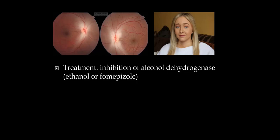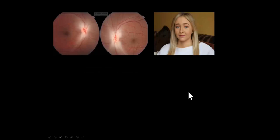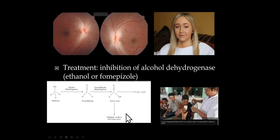Treatment involves inhibiting alcohol dehydrogenase to prevent the breakdown of methanol to formic acid. This can be done by giving the patient ethanol or fomepizole, which inhibits alcohol dehydrogenase. In some countries, such as Nicaragua, methanol exposure can be quite common, and patients are sometimes given rum to lessen the symptoms.